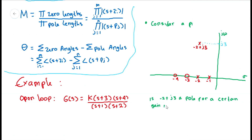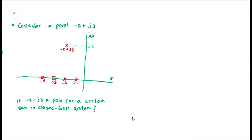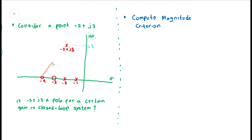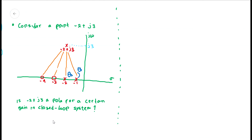Traditionally, the root locus represents poles marked by an X symbol, and zeros by a circle symbol. We then place the point minus 2 plus j3 on the plane. From the earlier explanation, we know that the poles of the system change with variations in system gain. The question is: is minus 2 plus j3 a pole for a certain gain in this closed-loop system? To answer this, we first draw straight lines from the existing system roots to the new point, resulting in each root having an angle relative to that new point.